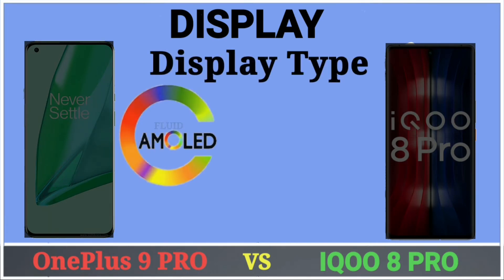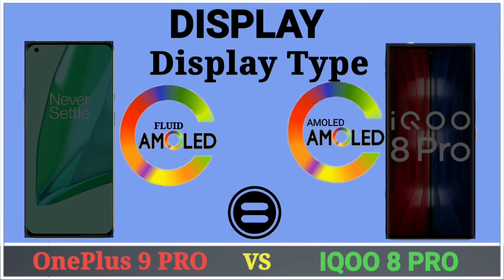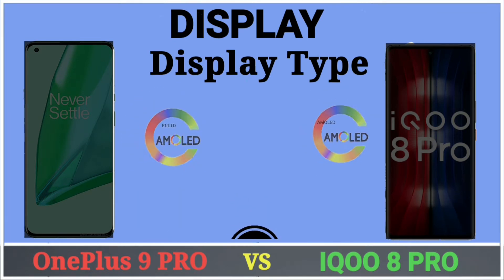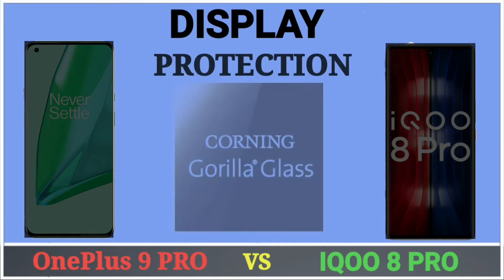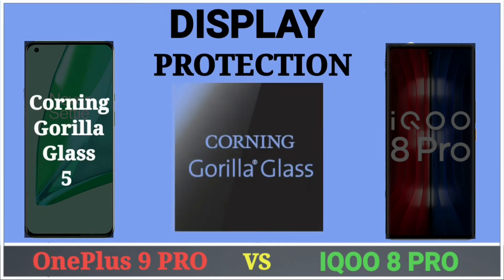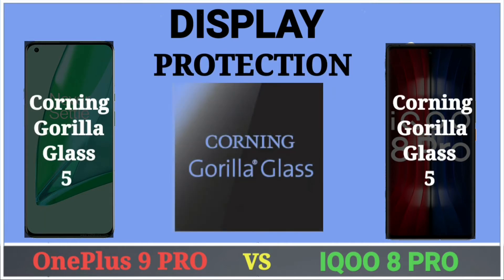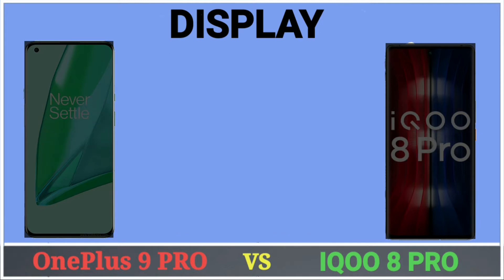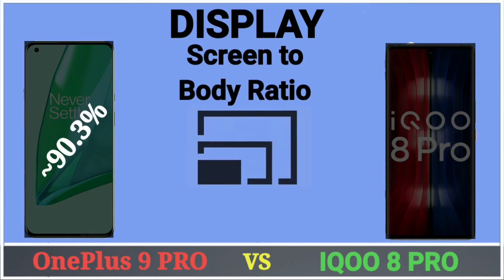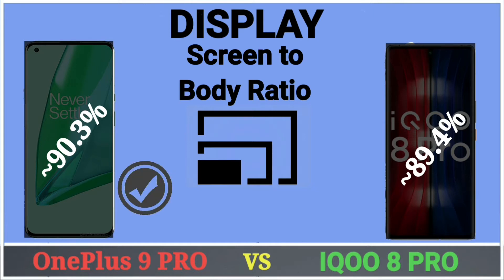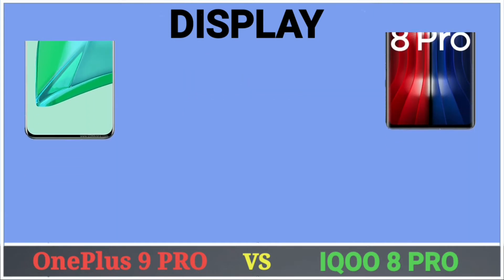Display types: OnePlus 9 Pro has an AMOLED Fluid display and iQOO 8 Pro has an AMOLED display. Both phones have Corning Gorilla Glass 5 protection. OnePlus 9 Pro has a 90.3% screen-to-body ratio and iQOO 8 Pro has 89.4% screen-to-body ratio.